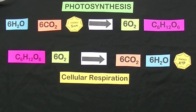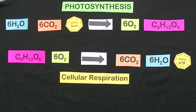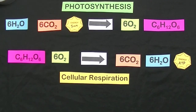Respiration, the process by which all cells break down glucose into a usable form of energy called ATP, starts with glucose and oxygen, and the products are CO2, water, and ATP.